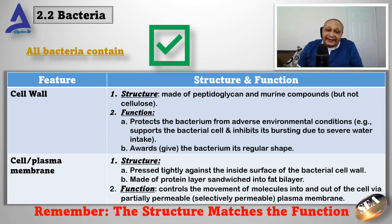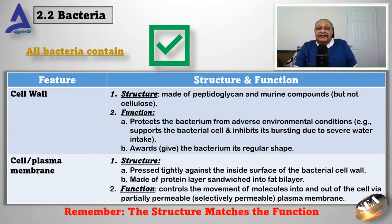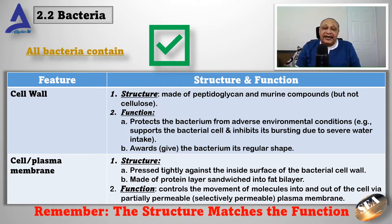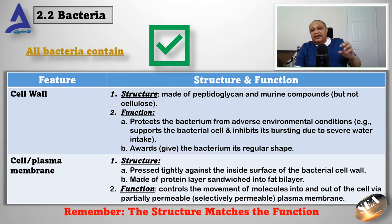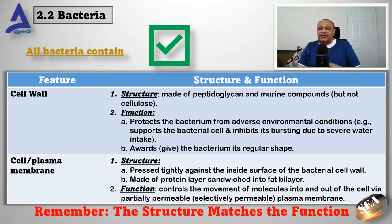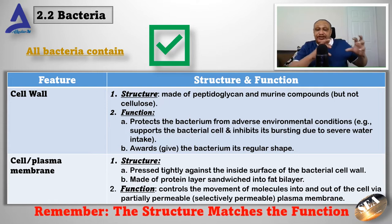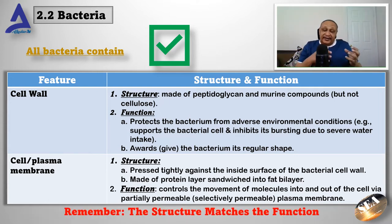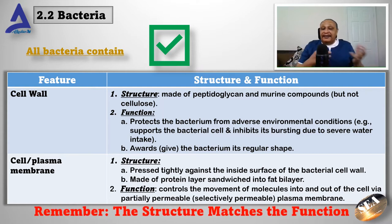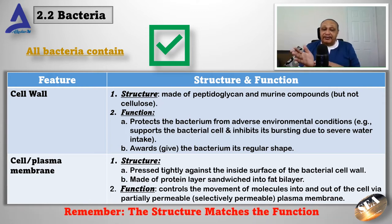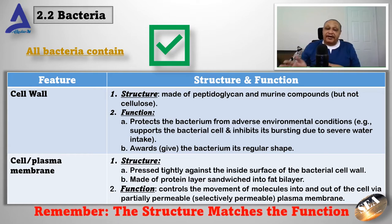The plasma membrane is pressed tightly inside the surface of the cell wall and is made up of a protein layer sandwiched with a bilayer of fats. Its very important function is to control the movement of molecules inside and outside the cell — that means it is partially permeable. By partially permeable, it selects the molecules that get in or get out of the cell. We call this a partially permeable membrane or selectively permeable membrane.